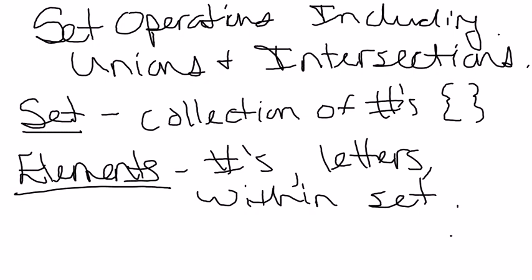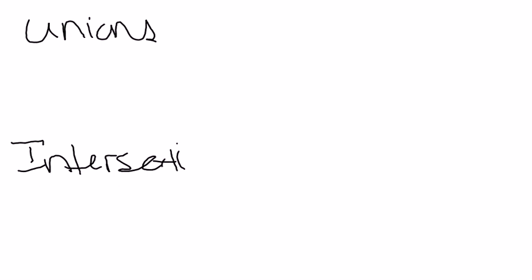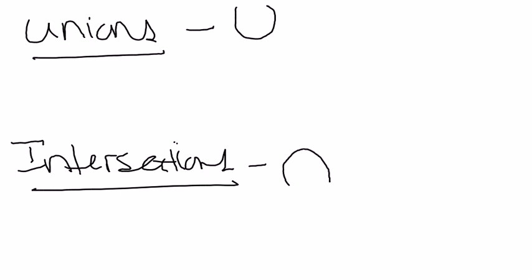letters or even objects within a set. And we also have the word unions and intersections which describe our sets. So we have unions and intersections which also have symbols associated with them. Unions is associated with the symbol U and intersection is associated with the symbol that looks like an upside down U.